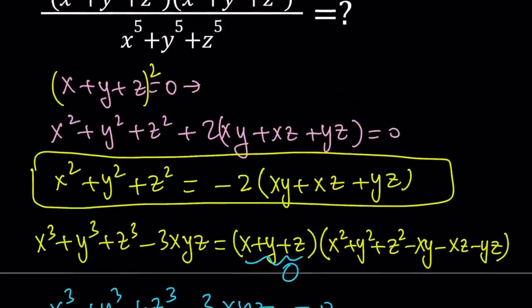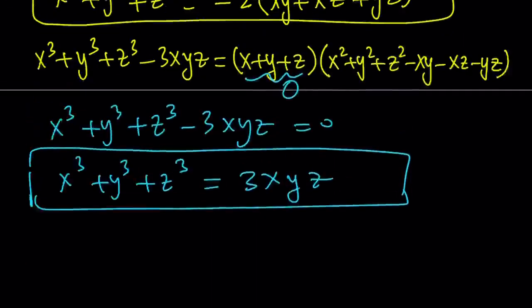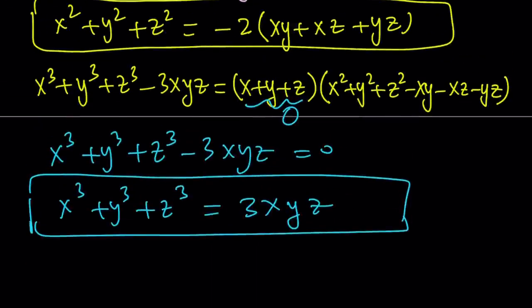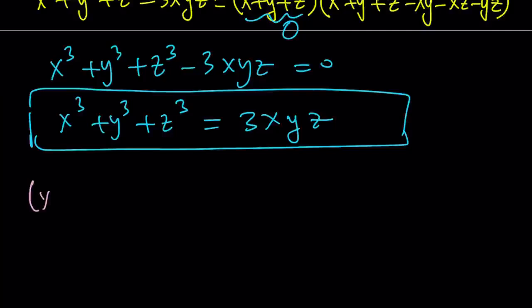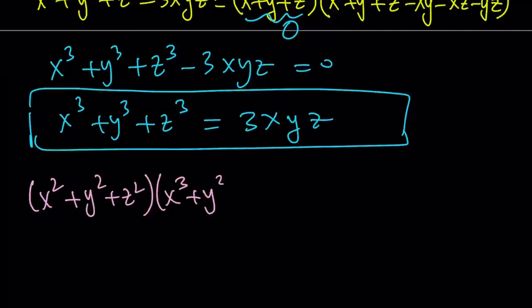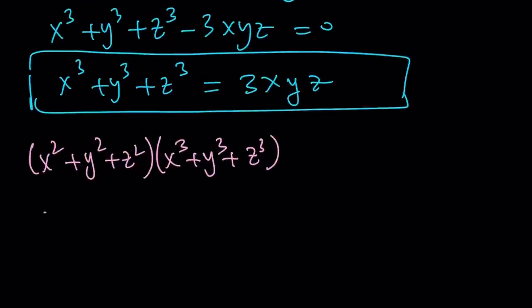In our expression, the numerator is the product of the sum of squares and the sum of cubes, and the denominator is the sum of the fifth powers. So we need something for the sum of fifth powers. I'm going to multiply the sum of squares by the sum of cubes, because that's going to give us the fifth powers and other terms. We do have expressions for both the sum of squares and the sum of cubes, but first I want to simplify the product expression as much as possible before doing substitutions.